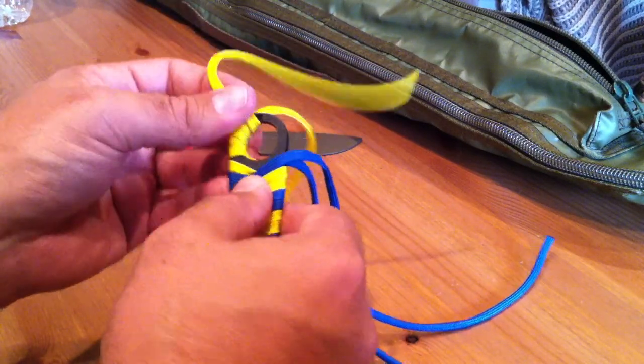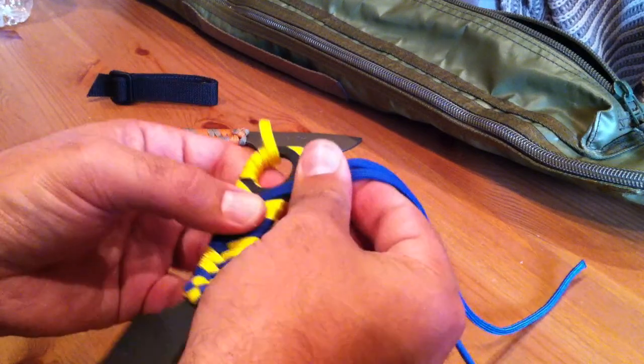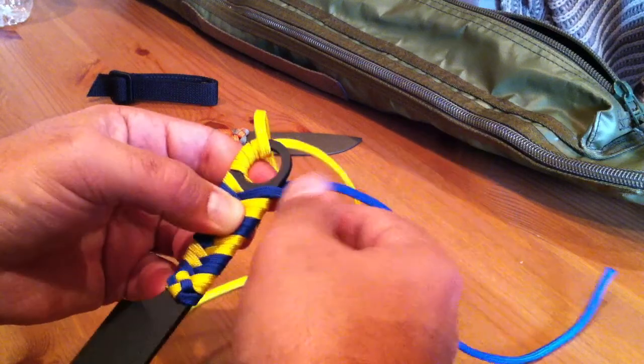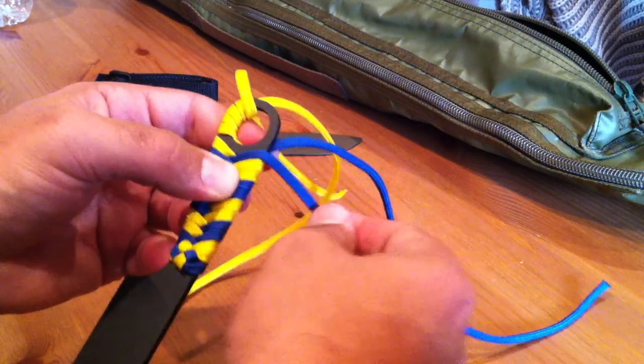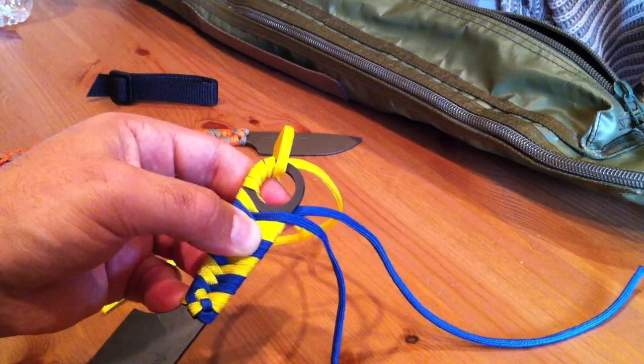And then you do the exact same thing with this other side. Let this go for a second. Keep this bottom one flat on the bottom and wrap this top one around it over and over again until you get to the middle. When you get to that point, watch the next video.